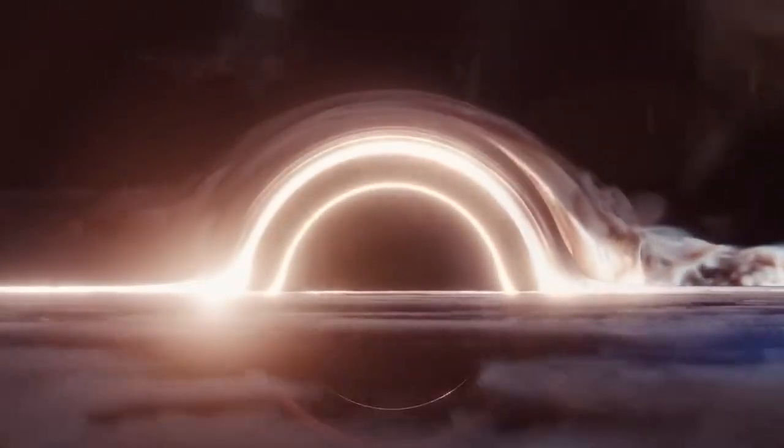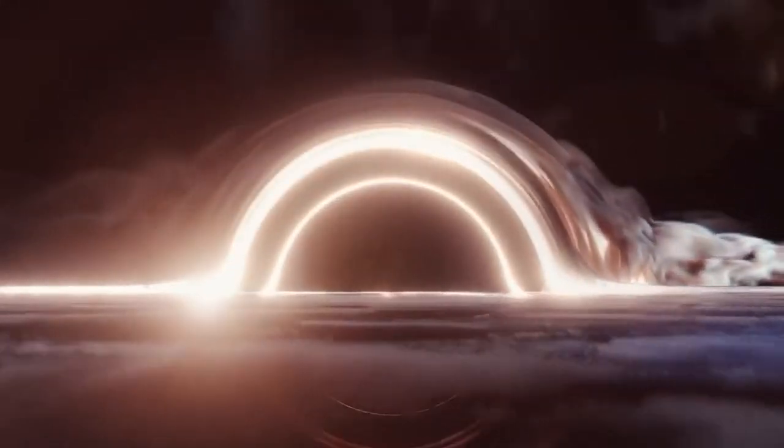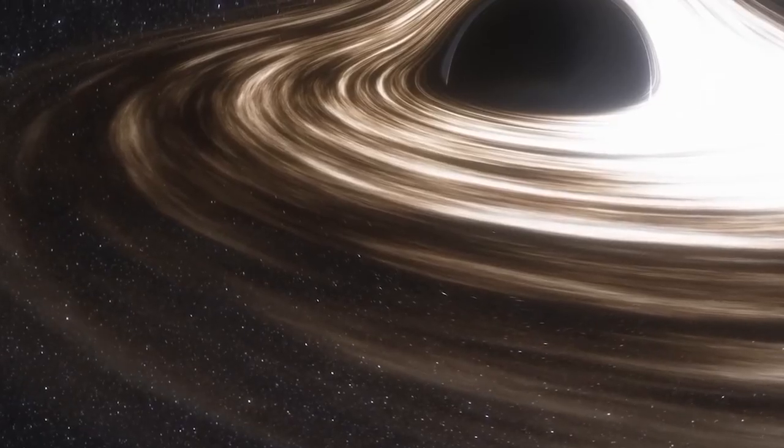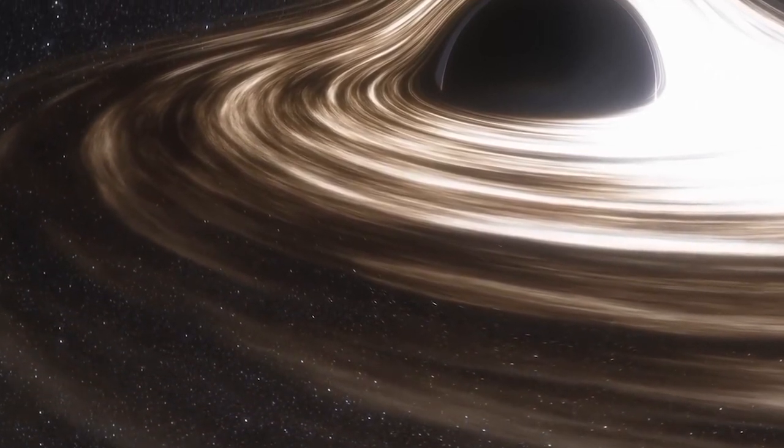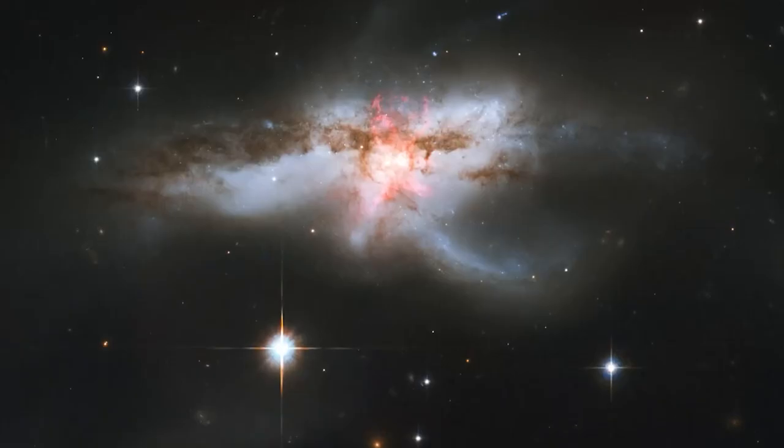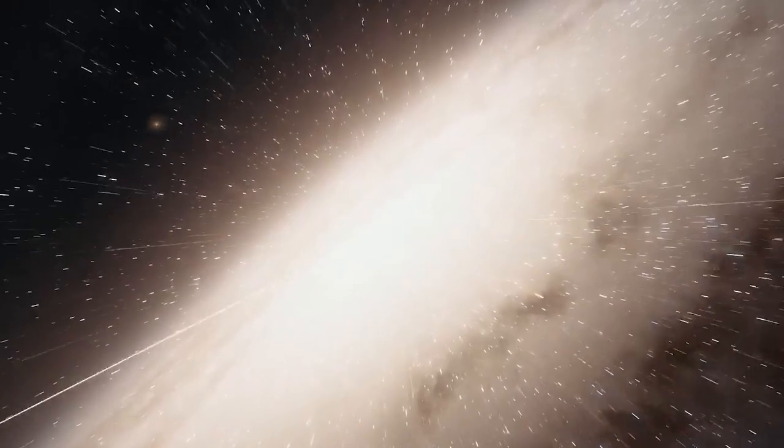The supermassive black hole itself, however, is not what we are seeing right now. Rather, it is being surrounded by swirling, extremely hot material. The accretion disk, a thin flow of gas and dust that has not yet completely fallen into the supermassive black hole, is the name given to that whirling ring of debris.